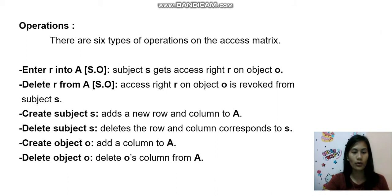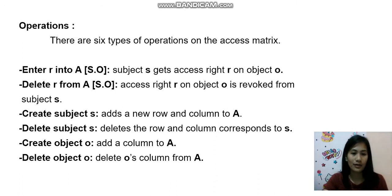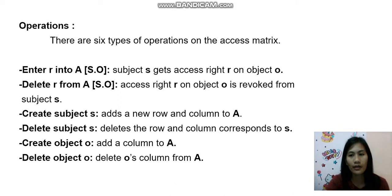The operations: there are six types of operations in the access matrix — enter, delete, create subject, create object, destroy subject, and destroy object. If you have to create operations on your data, you have to use the subject or object to allow the system to perform what you need to create.